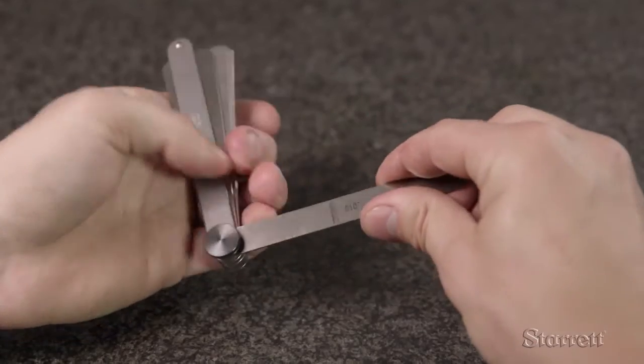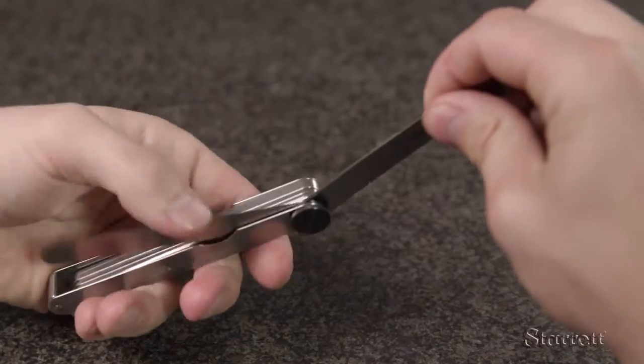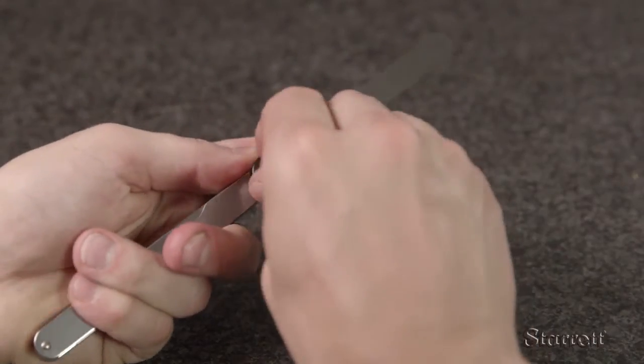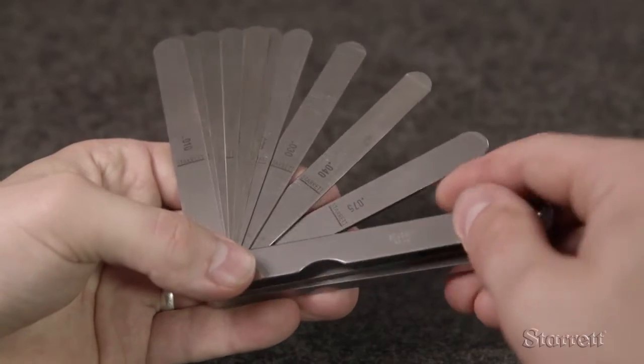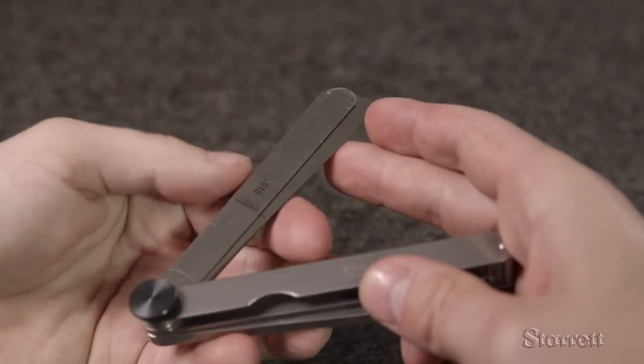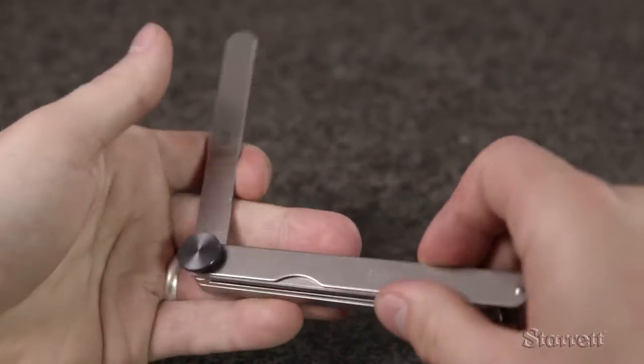First, determine the blade or blades you will need. Swing the appropriate blades out and then lock to hold them in place while keeping the unused blades out of the way. For example, for a 0.075 size use only the 0.075 blade.